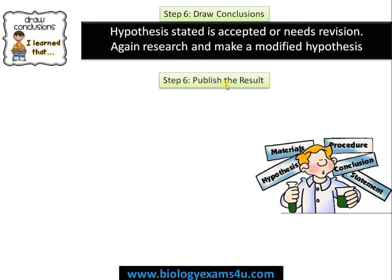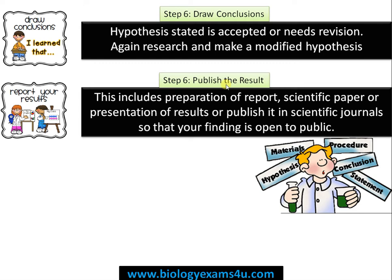Finally, step seven — if the hypothesis stated is accepted, we need to publish the result. This includes preparation of a report, publishing the paper in a standard format in scientific journals, and maybe presentation of results, so that our research is open to the public and anyone can carry out that research further. In short, scientific method can be defined as an organized and systematized logical way of finding answers to questions or finding solutions to problems through observation, experimentation, and moving through all these steps.